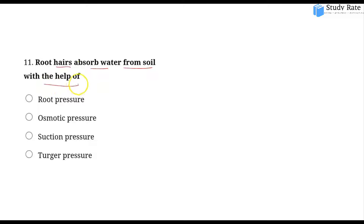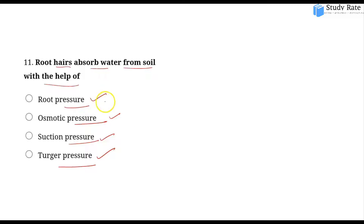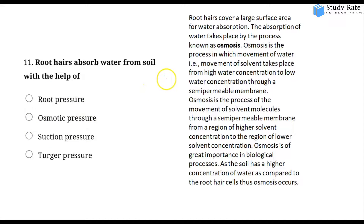The eleventh question: Root hair absorbs water from soil with the help of root pressure, osmotic pressure, suction pressure, or turgor pressure? Root hair absorbs water from the soil mainly with the help of osmotic pressure. Root hair covers a large surface area for water absorption. Absorption of water takes place by the process of osmosis — water moves from high concentration to low concentration across a semi-permeable membrane. This is important in biological processes because soil has a higher concentration of water compared to root hair cells.